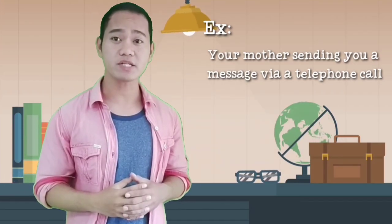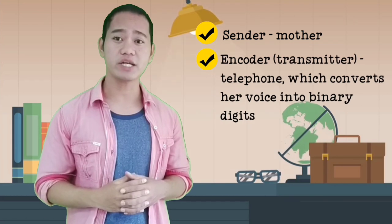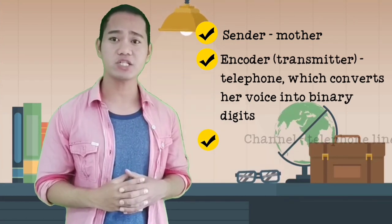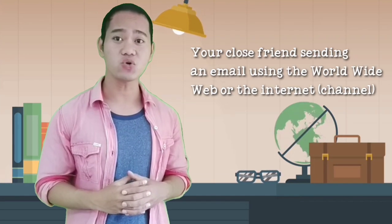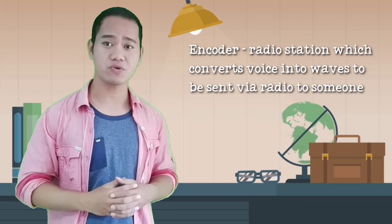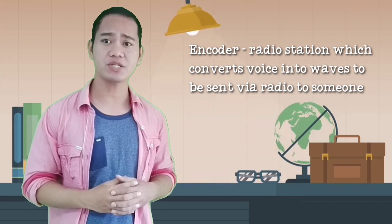Other examples include your mother sending you a message via telephone call. Your mother is the sender, and the encoder or the transmitter is the telephone which converts her voice into binary digits to be sent down the telephone line. And your close friend is sending you an email using the world wide web or the internet as a channel. Another encoder may also include a radio station which converts voice into waves to be sent via radio to someone.